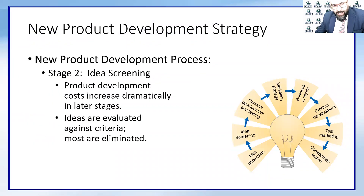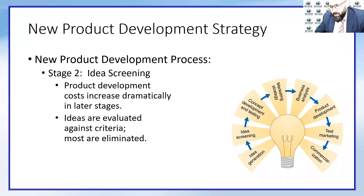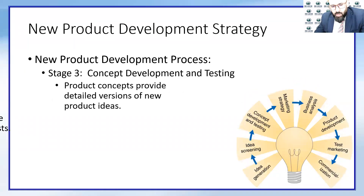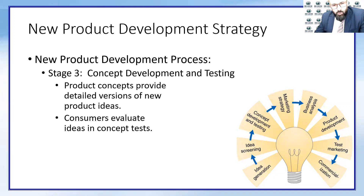Stage two is idea screening. Product development cost increases dramatically in the later stages, so ideas are evaluated against criteria and most are eliminated. One technique is multi-weighted selection criteria — a great way to select the best idea. You will stick with very few ideas, maybe just one to go forward with.